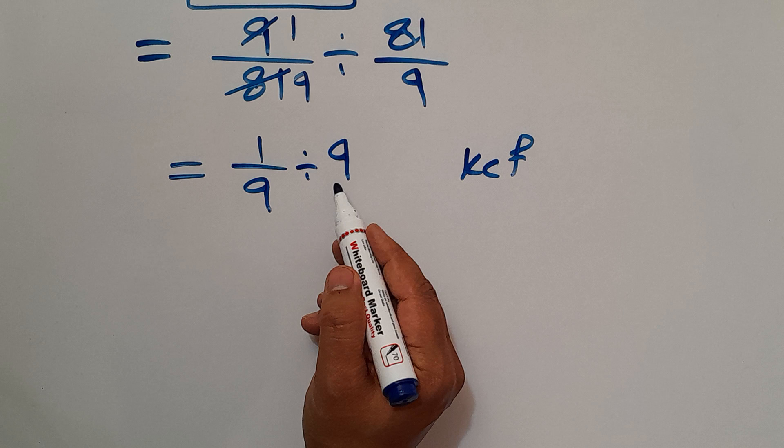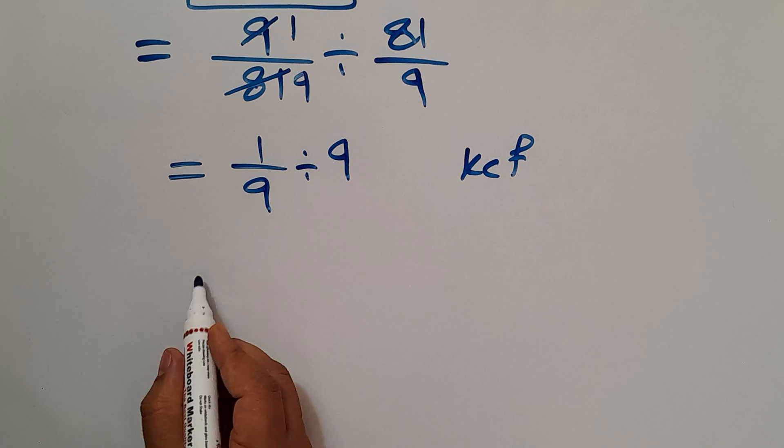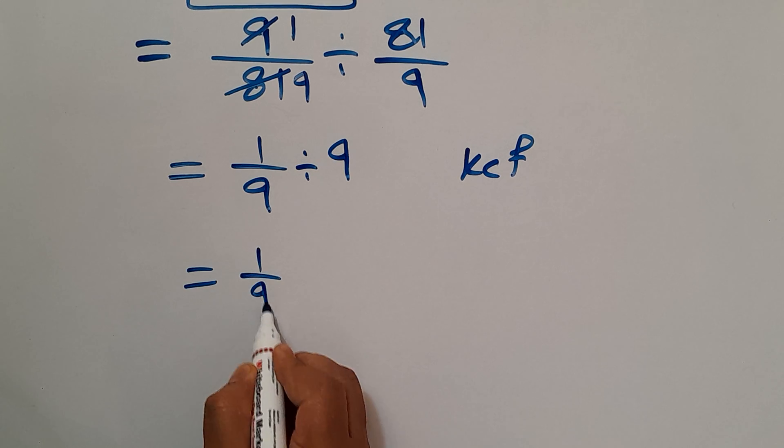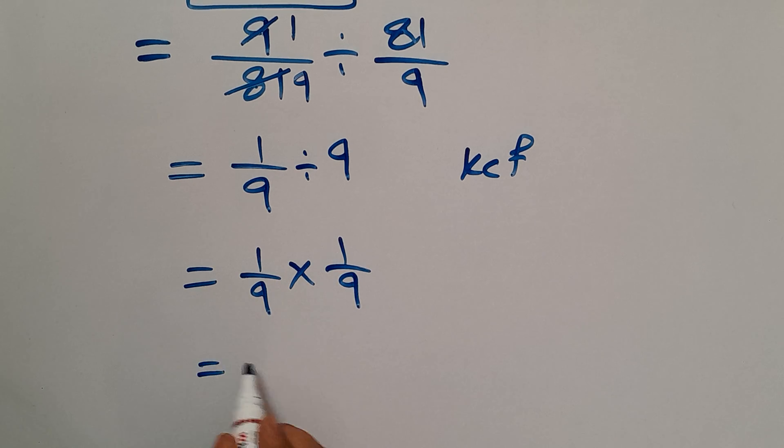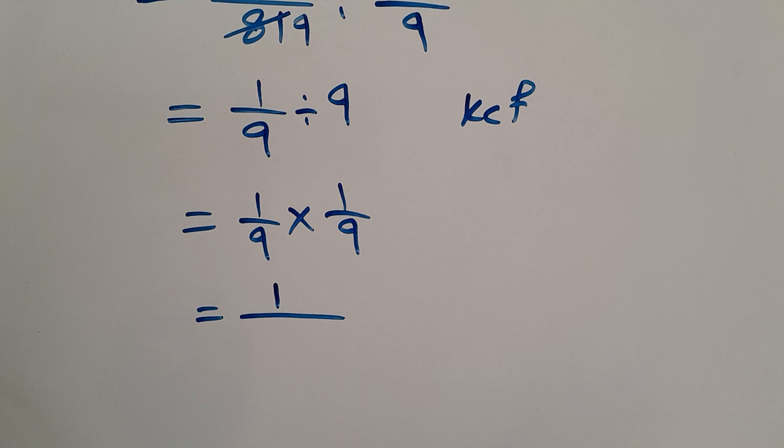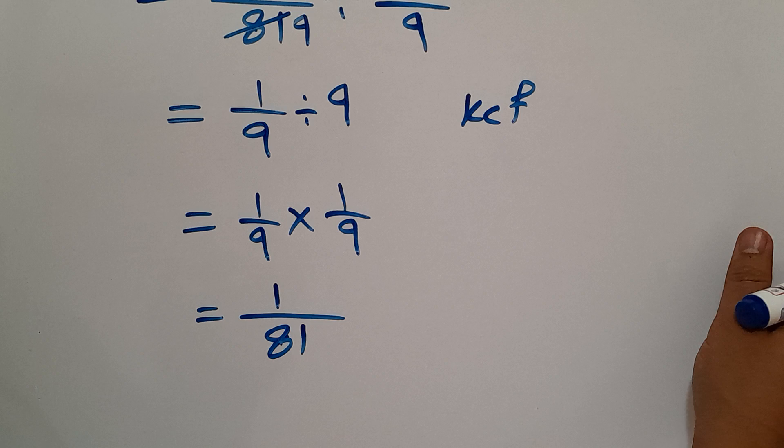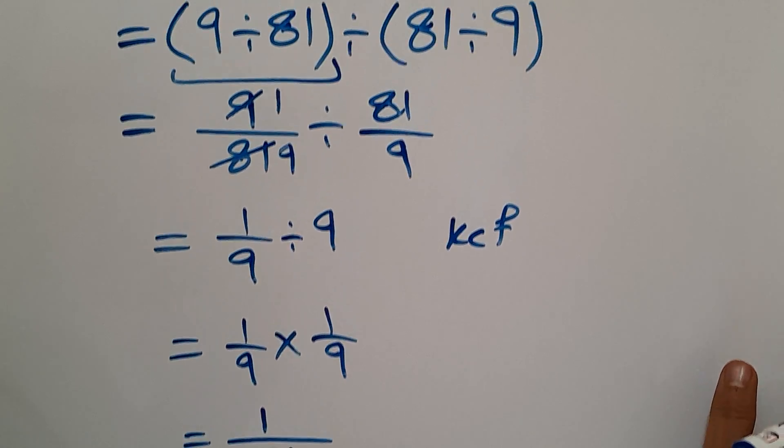Change division to multiplication and flip the second fraction. So we can write 1 over 9 times 1 over 9. And this is equal to 1 times 1 gives us 1 over 9 times 9 equals 81. So our final answer to this problem is just 1 over 81.